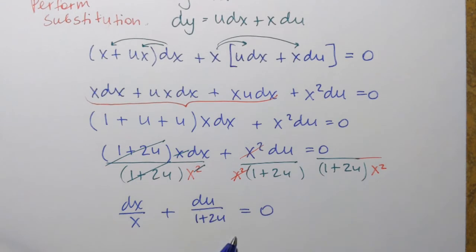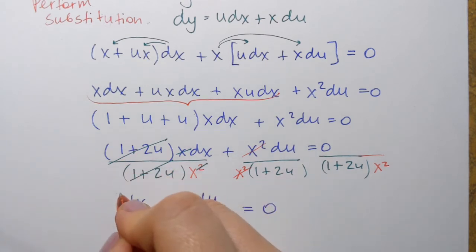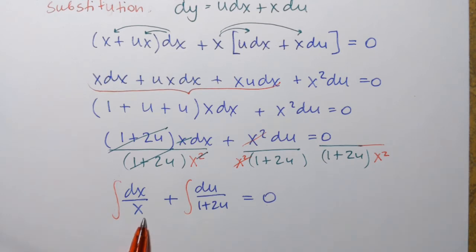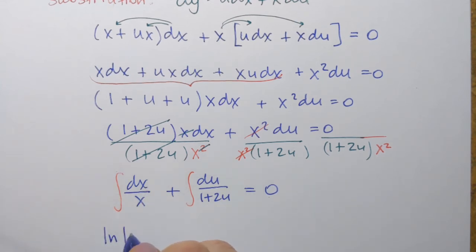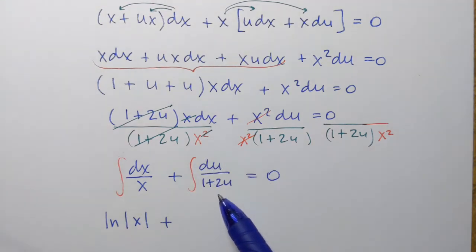We've separated the variables x and u, and now we just have to integrate. Integrating both sides: the antiderivative of 1/x is ln|x|. For the second integral, du over (1 + 2u), I'll perform a t-substitution on the side. I can't call it u-substitution since I already have u, so let t equal 1 + 2u. Then dt = 2 du, which means du = dt/2.